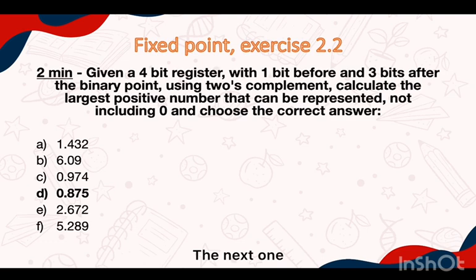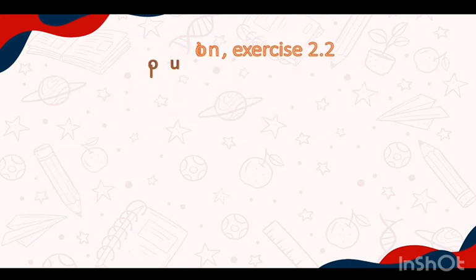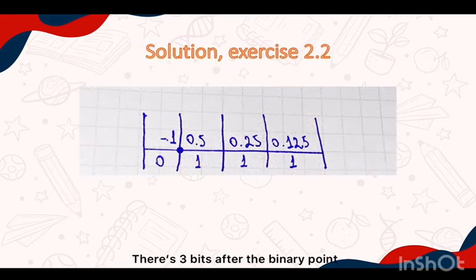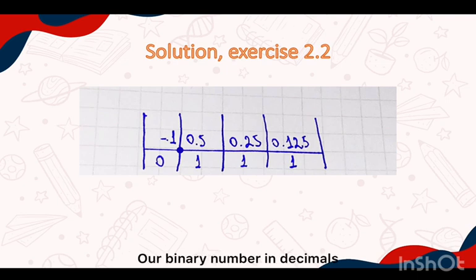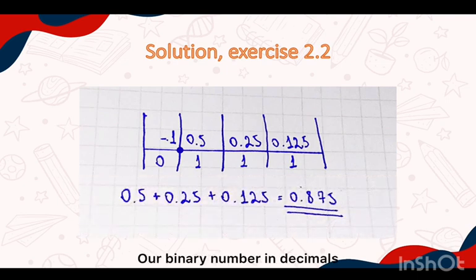The next one. As we know that there are 3 bits after the binary point, we have that our binary number in decimals equals 0.875.